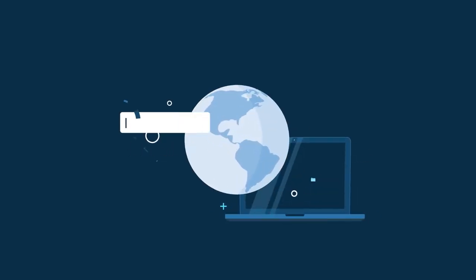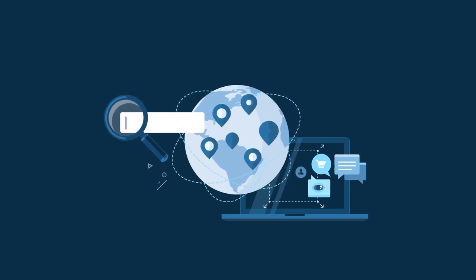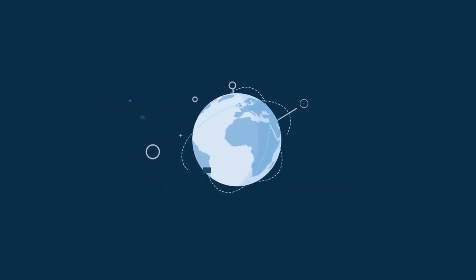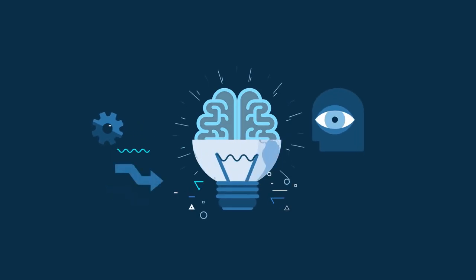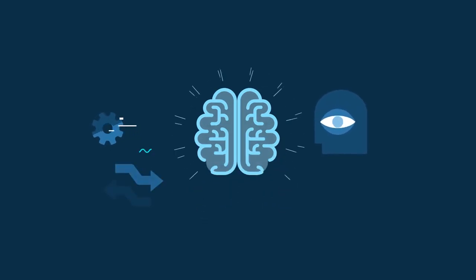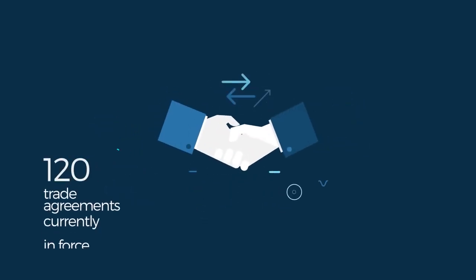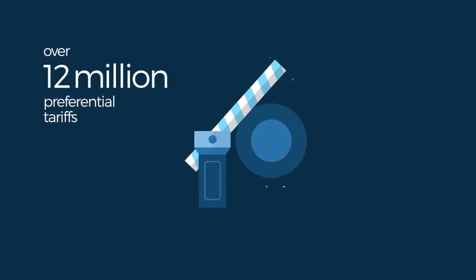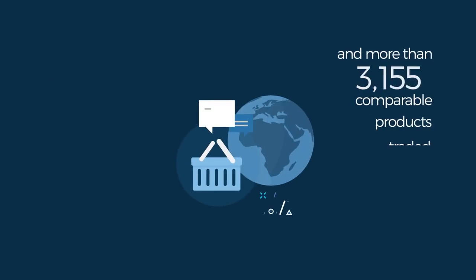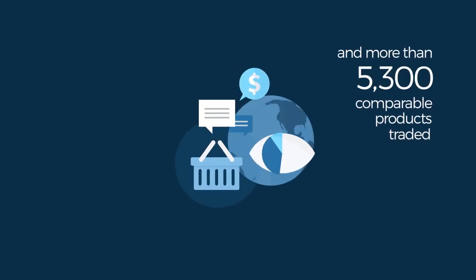InTrade. Access to markets and data on trade and integration in Latin America and the Caribbean is becoming increasingly complex. The key element is understanding the network of trade agreements: 120 trade agreements currently in force, over 12 million preferential tariffs, and more than 5,300 comparable products traded. How can we manage this information?